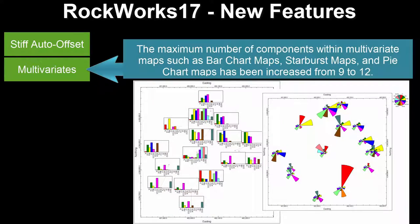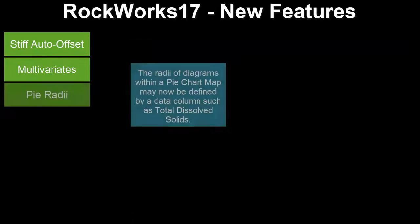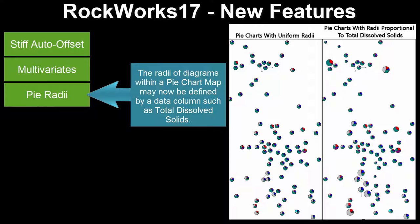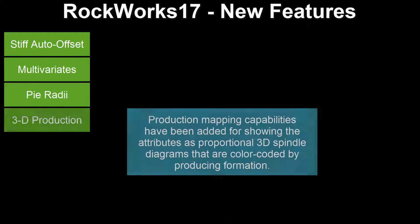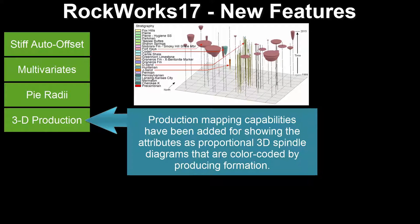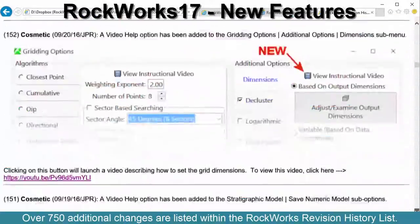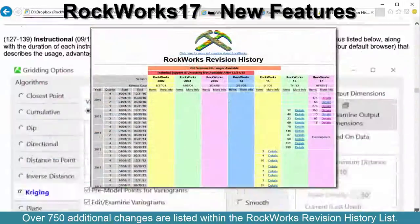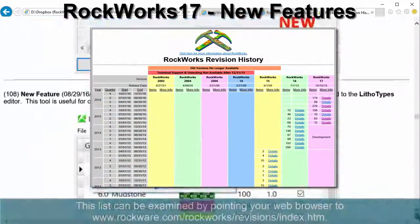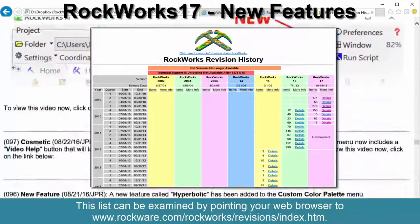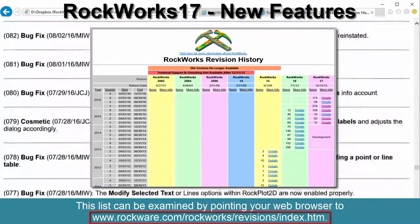The maximum number of components within multivariate maps, such as bar chart maps, starburst maps, and pie chart maps, has been increased from 9 to 12. The radii of diagrams within a pie chart map may now be defined by a data column such as total dissolved solids. Production mapping capabilities have been added for showing attributes as proportional 3D spindle diagrams that are color coded by producing formation. Over 750 additional changes are listed within the RockWorks revision history list, available at www.rockware.com.